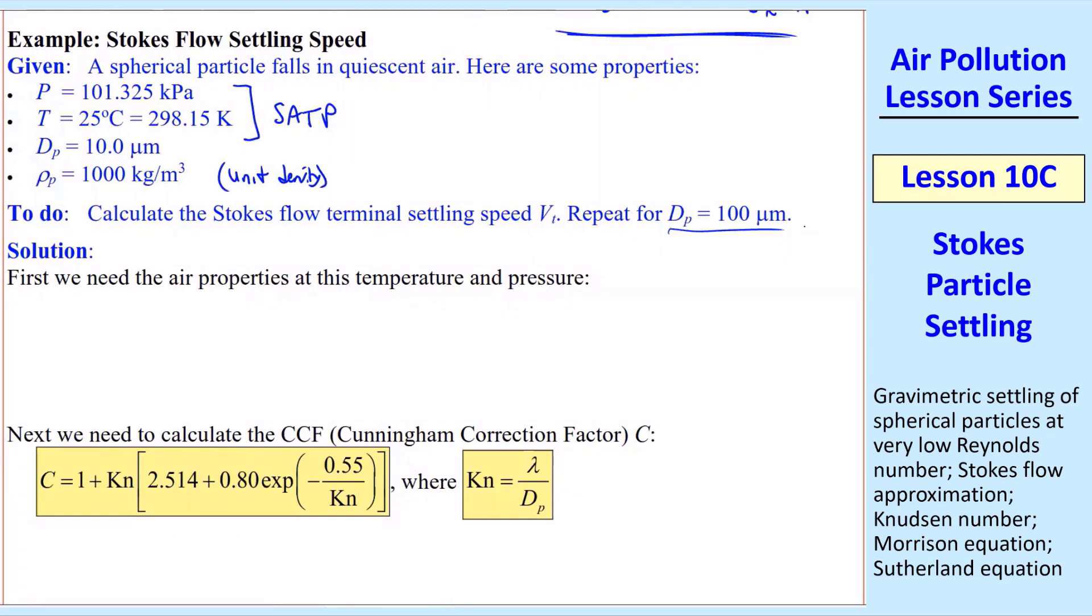To solve a problem like this, first I would find the air properties at this temperature and pressure. Normally, you'd have to use the ideal gas law, Sutherland's law, but here our conditions are SATP, standard ambient temperature and pressure.